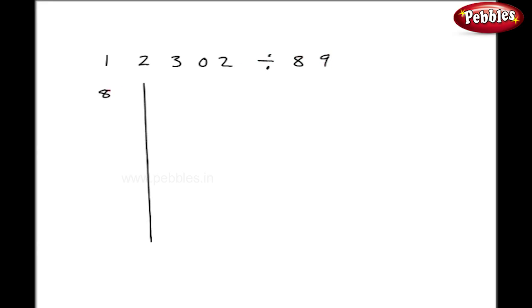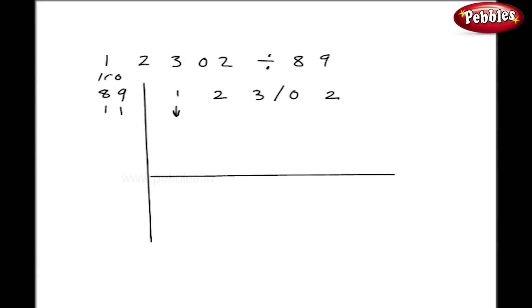Let us take one more example: 12302 divided by 89. I will write 89. My base is 100, so the difference is 11. I write this number giving some spaces. As I got two zeros in the base, I'll give a stroke here. Take this 1 down. 1 into 1 is 1, 1 into 1 is 1. I get 3 here. 3 into 1 is 3, and 3 into 1 is 3 here — I get 7. My stroke will come exactly below. 7 into 1 is 7 and again 7, so I get 10 here and 7 plus 2 is 9. I have to proceed further as 109 is greater than 89.